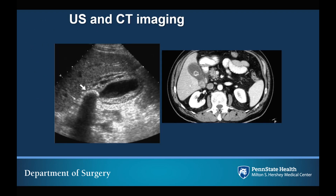Here you can see comparative images of ultrasound and CT imaging of a patient with acute cholecystitis. On the CT image on the left, you can make out the stone that causes shadowing because it is hyperechoic, pericholecystic fluid around the gallbladder, distension, and wall thickening — very diagnostic findings. On the right with the CT image, you can make out a gallstone as well as pericholecystic fluid, wall thickening, and a distended gallbladder. However, CT scan is not nearly as sensitive or specific as abdominal ultrasound.